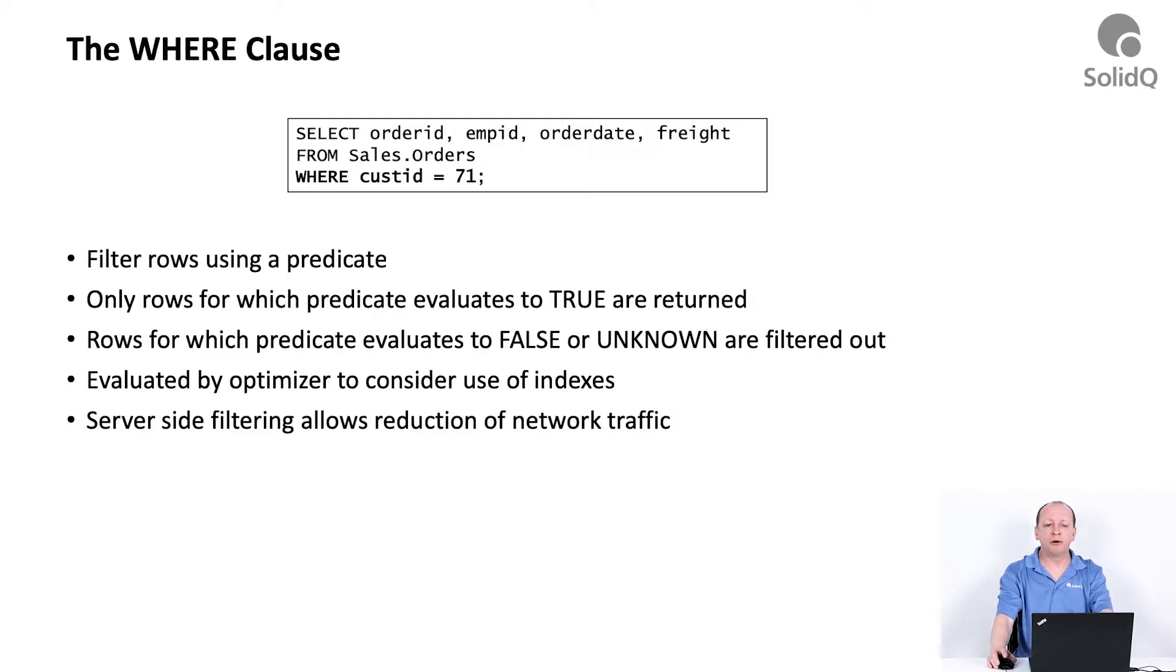But in a row where the customer ID is NULL, NULL equals 71 in this case is UNKNOWN, and the UNKNOWN case ends up getting filtered out like a false for filtering purposes. So the only rows that you will get back from the filter are the ones for which the predicate evaluated to true.